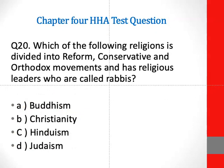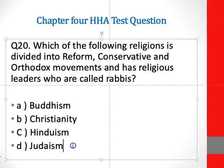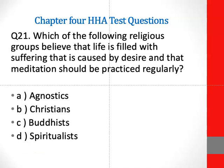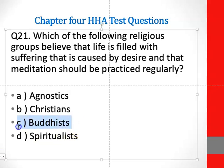Question 20: The correct answer is D — Judaism. Question 21: The correct answer is C — Buddhism.